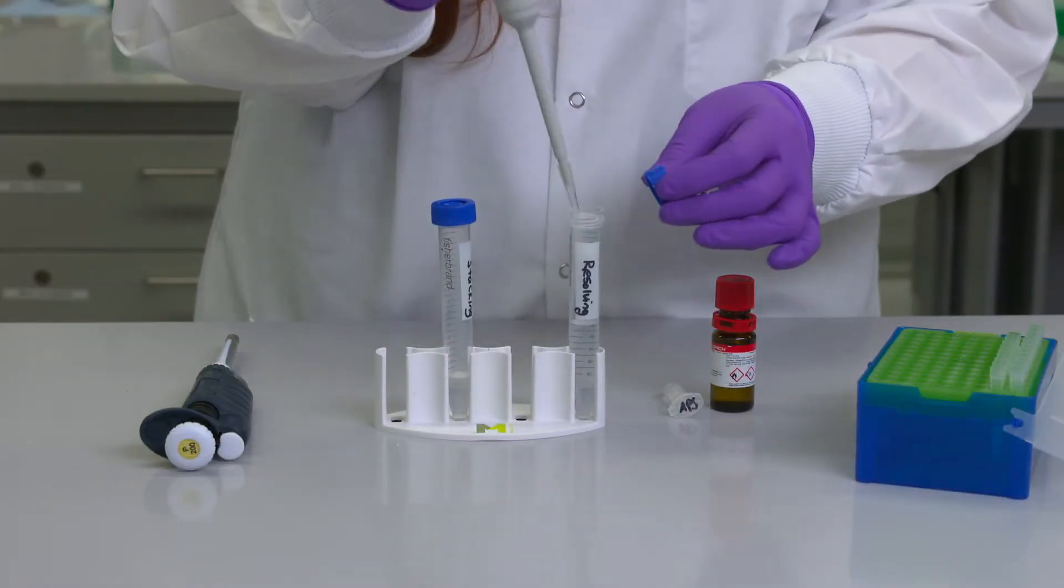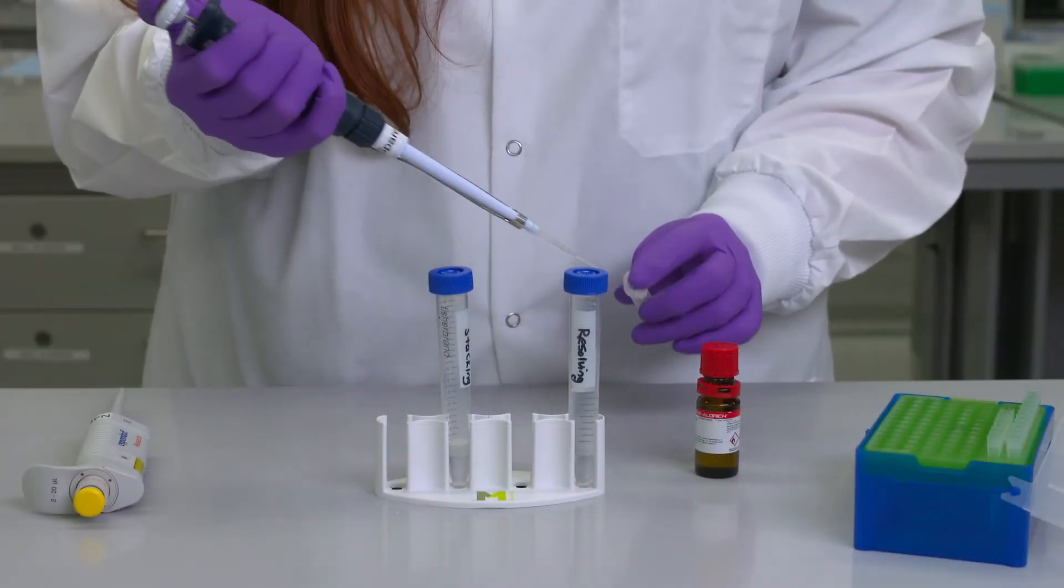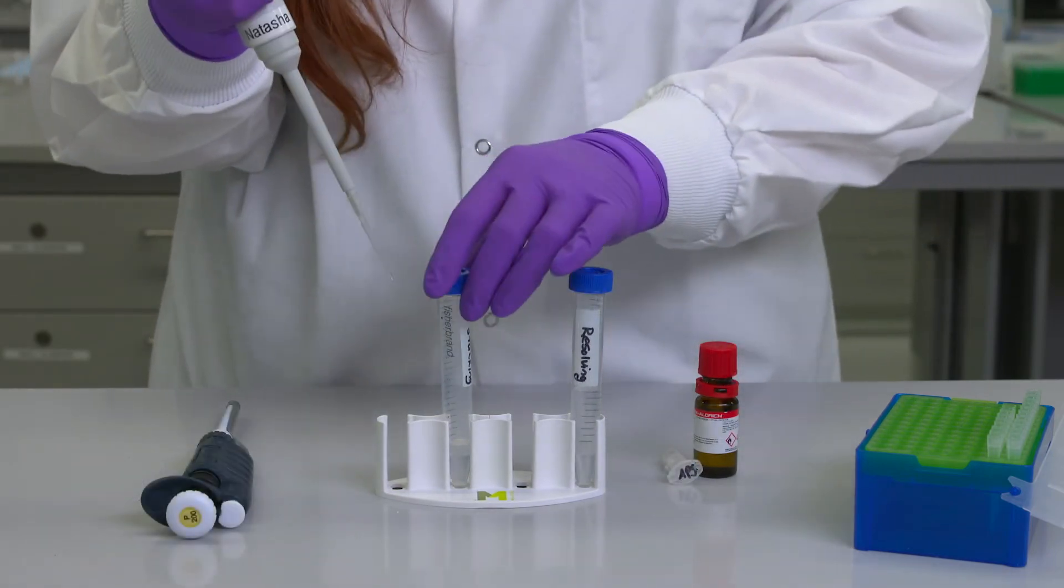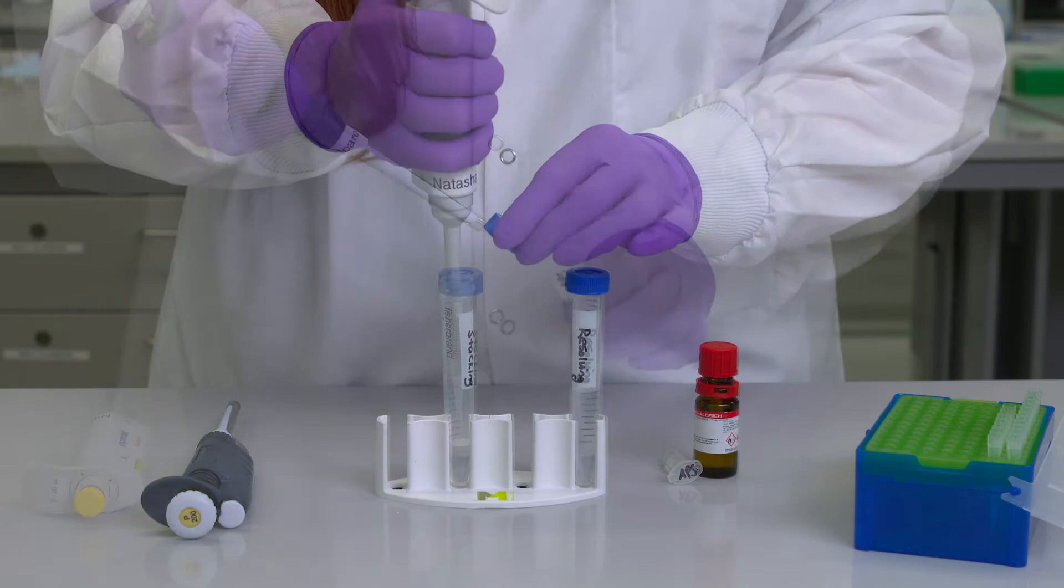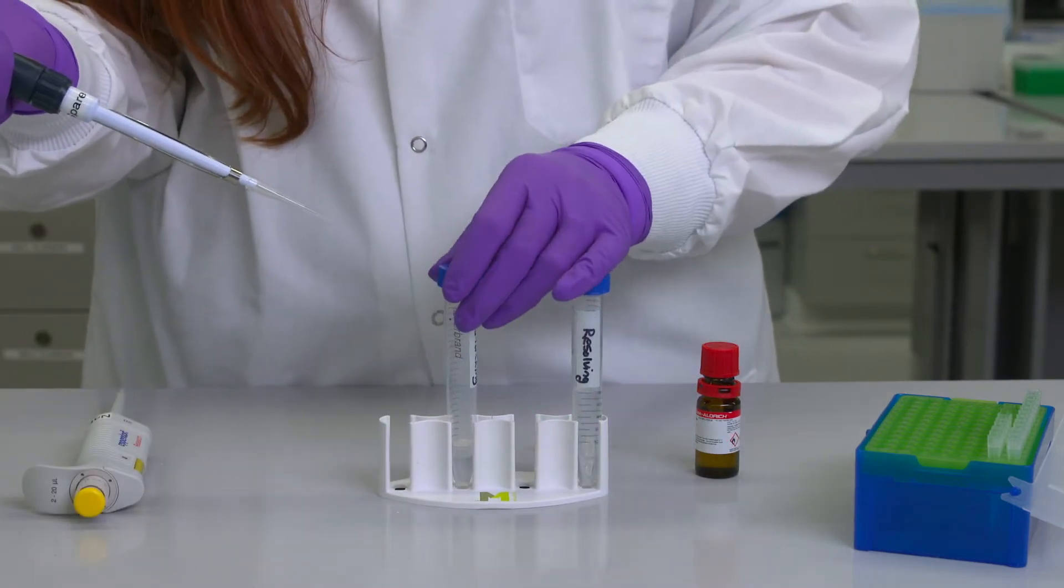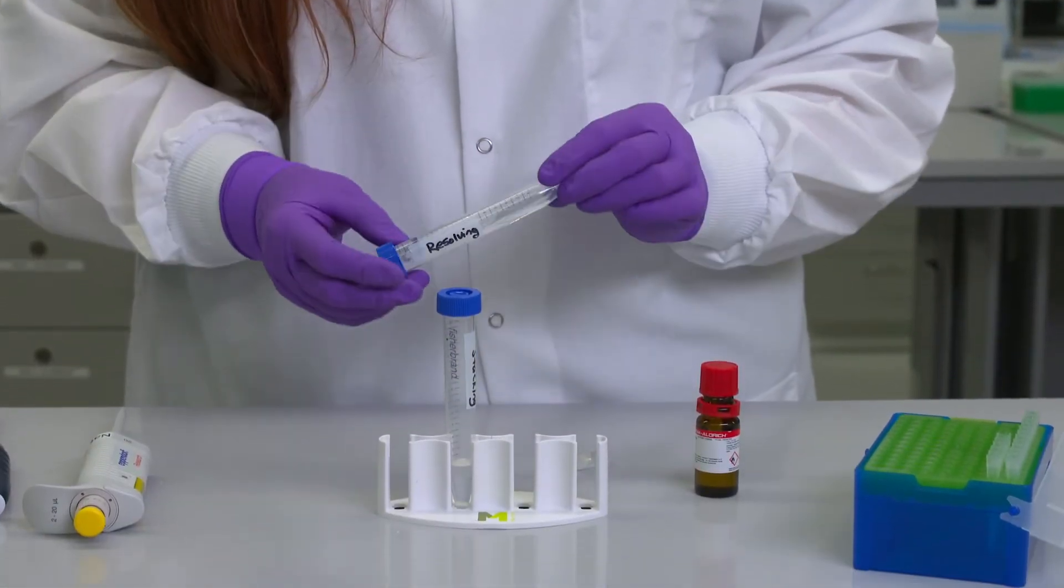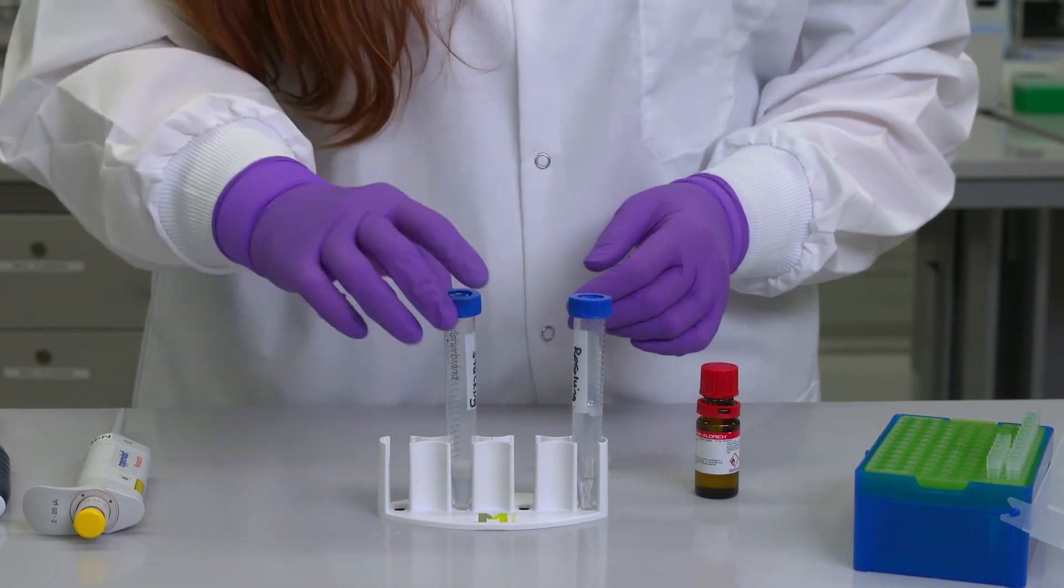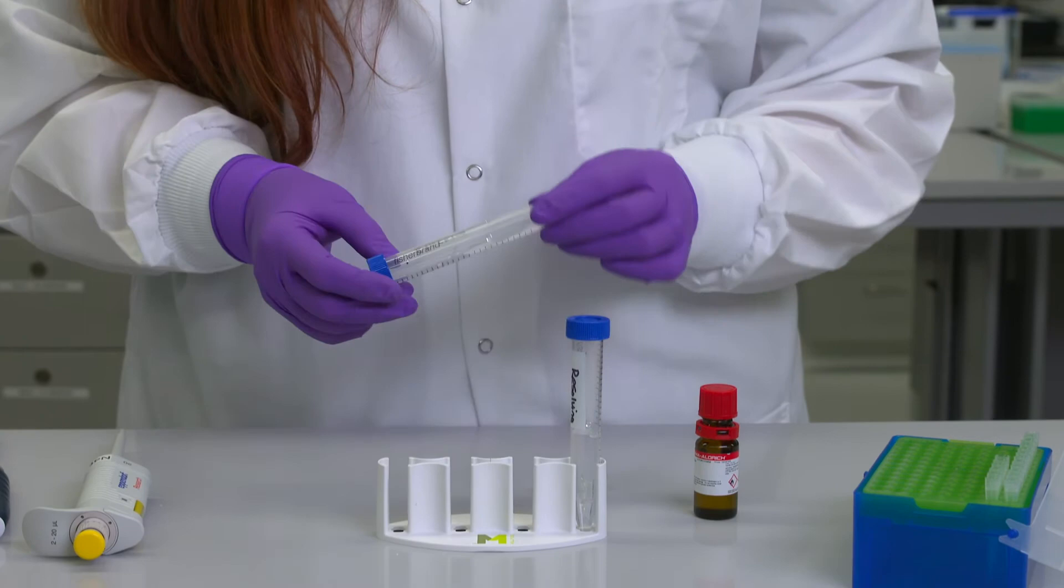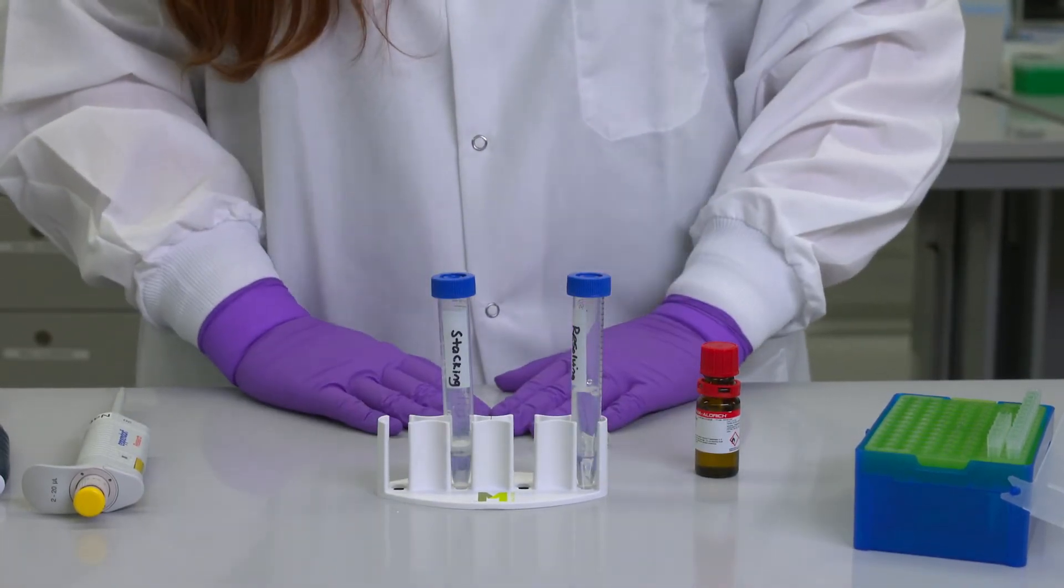Next, I'll add 3 microliters of TMED and 30 microliters of APS to the resolving gel, and then add 2 microliters of TMED and 20 microliters of APS to the stacking gel. Mix both solutions by gently inverting the conicals. Try to avoid introducing air bubbles while mixing. Once APS and TMED are added, the gels will begin to polymerize, so gels should be poured quickly after this step.